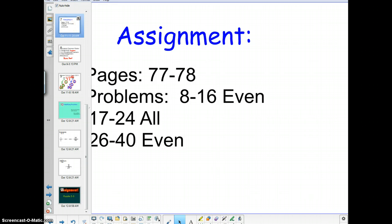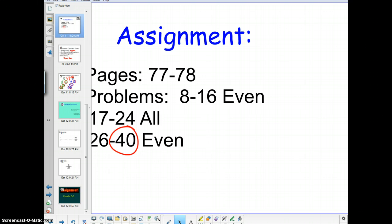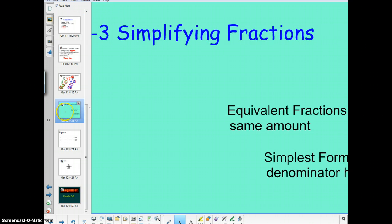So your assignment here, I believe it was like closer to the end, closer to 40 here, that you needed to find the greatest common factors of a couple of numbers.